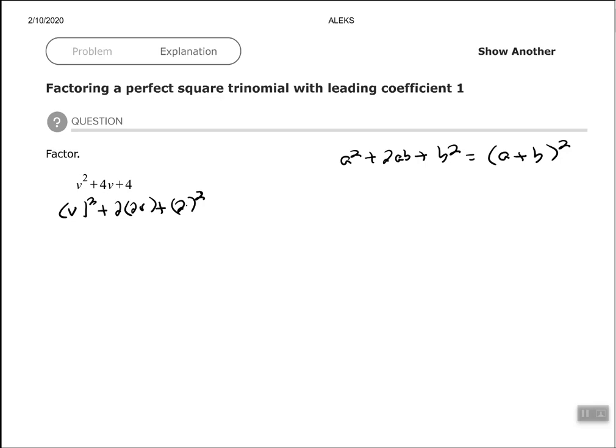the equivalent of 2 times in this case 2v which it is which is 4v. So if we have the trinomial in the form of a squared plus 2ab plus b squared in this case v is in the place of a, 2 is in the place of b,